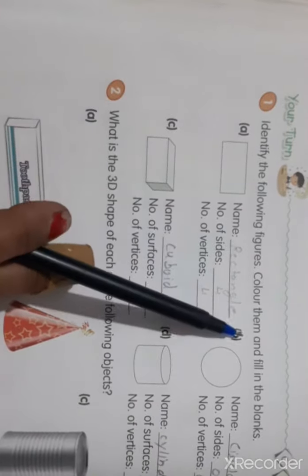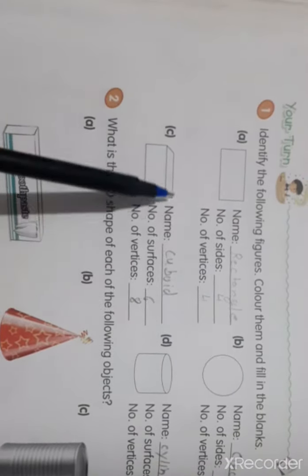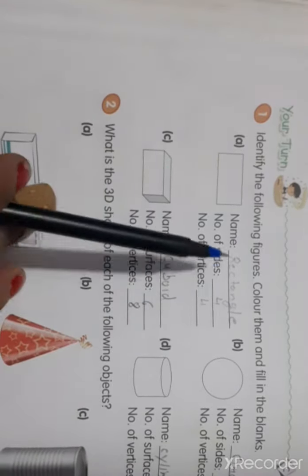And your turn, identify the following figure, color them and fill in the blanks. These figures are already given there and you have to find out, identify them, and write the side, vertex, and name.